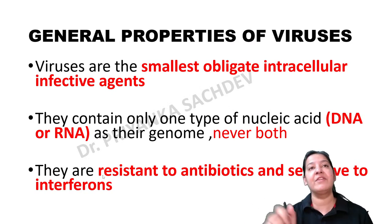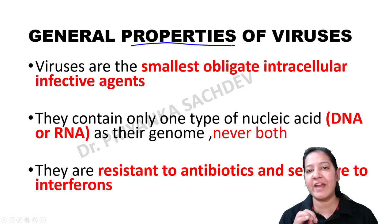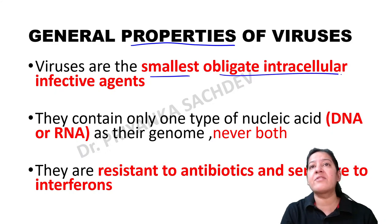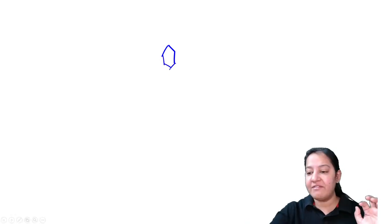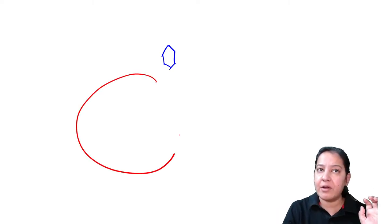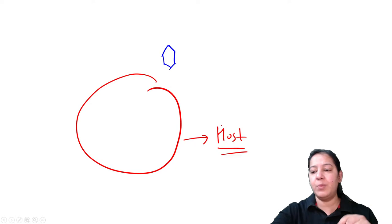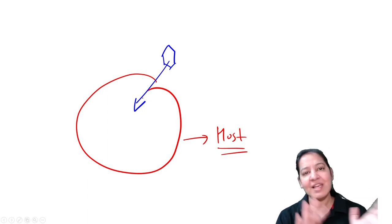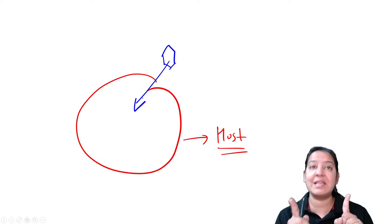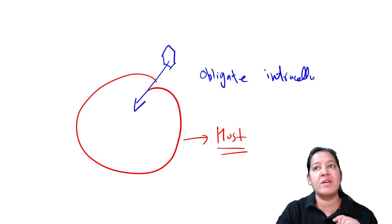Before starting virology, I would like to tell you some properties of viruses. What are viruses? Viruses are different from bacteria. Viruses are the smallest obligate intracellular agents. A virus cannot survive outside the host cell - for surviving and for replicating, the virus requires a host cell. This host cell can be a human cell or an animal cell.